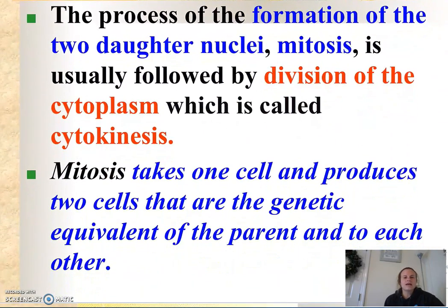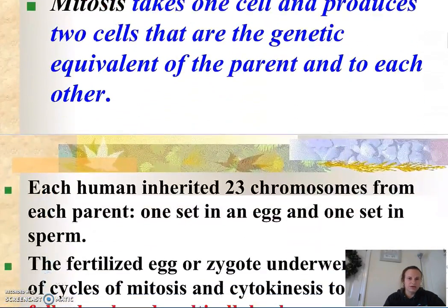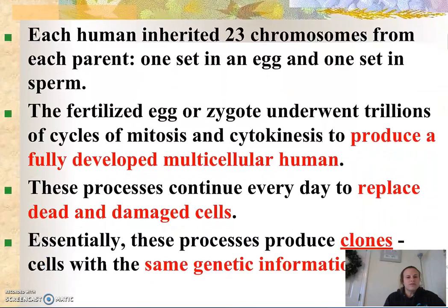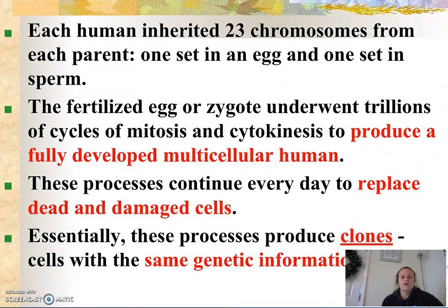What is cytokinesis? Well, cytokinesis is just the division of the cytoplasm, whereas mitosis takes one cell and produces two cells that are the genetic equivalent of the parent and to each other. So mitosis is division of the nucleus where what I'm forming is a clone as far as chromosome numbers.